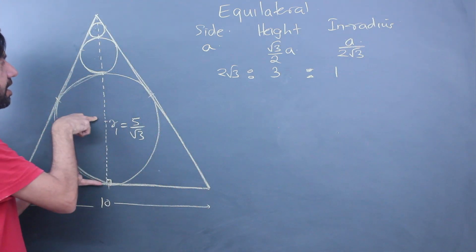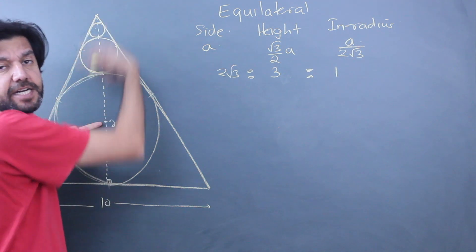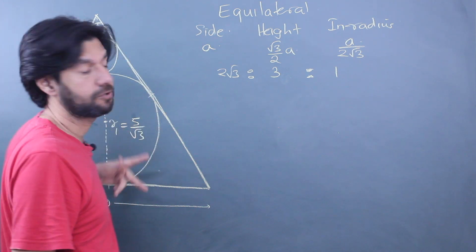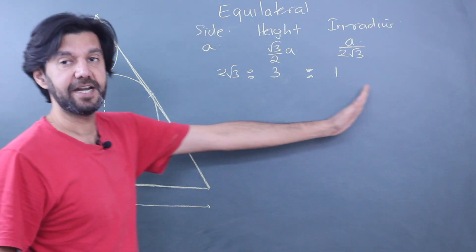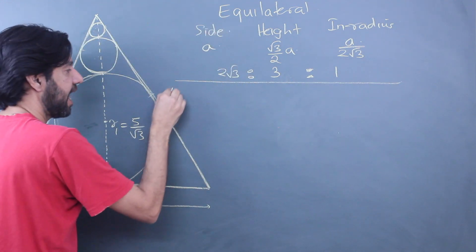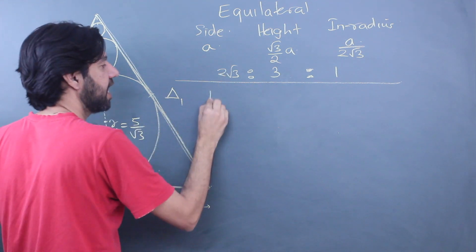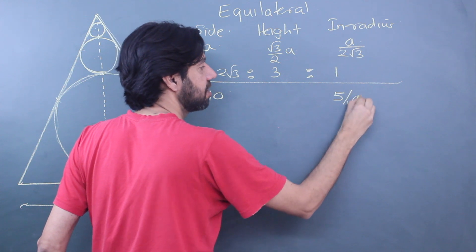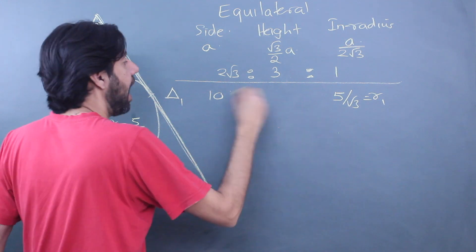The inradius is nothing but one-third, and that was pretty obvious, right? This is the centroid. The centroid divides the height into circumradius and inradius in a 2:1 ratio. So circumradius is two-thirds of the height, inradius is one-third of the height. So I'm taking triangle 1, the larger triangle. I know the side is 10, so the inradius is 5/√3. This is your r1. I also know the height is 5√3.